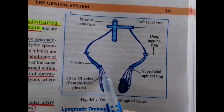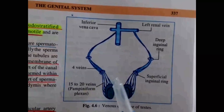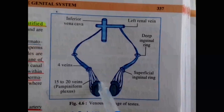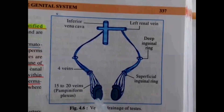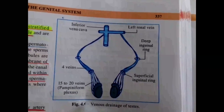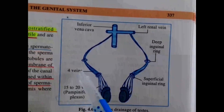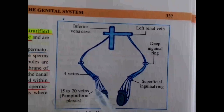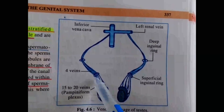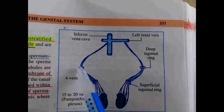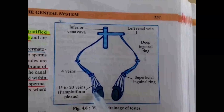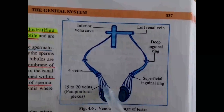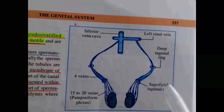The pampiniform venous plexus wraps around the testicular artery. Its importance is that it helps in the counter-current heat exchange mechanism. The arterial blood coming to the testis is at a high temperature, but for spermatogenesis the testis requires a temperature 2 to 3 degrees Celsius lower than body temperature. The venous blood loses heat to keep the testis at a lower temperature.